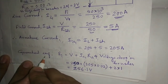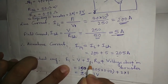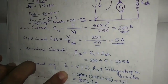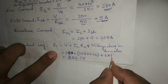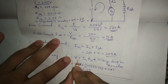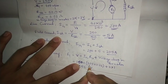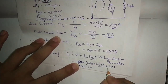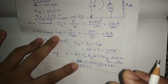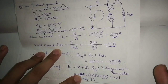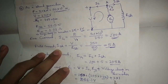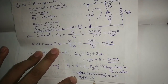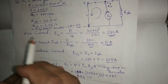For the generator case, the generated EMF E1 equals V plus Ia1 into Ra plus voltage drop in brushes. Substituting: 250 plus 205 into 0.02 plus 2 into 1 (since each brush has 1 volt drop and there are 2 brushes, giving 2 volt brush drop). This gives E1 equal to 256.1 volt, which is the generated EMF for the DC generator.